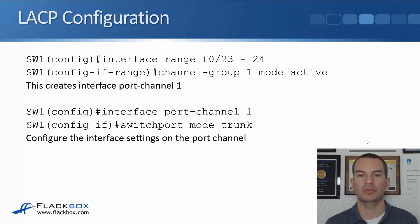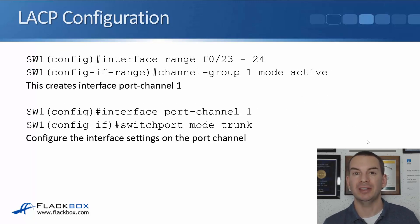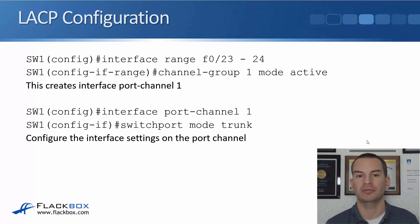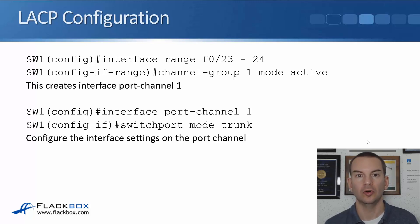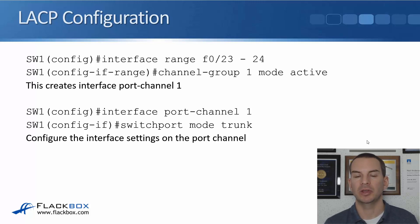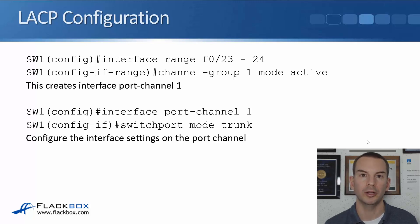The configuration is done at the interface level. Specify the interfaces you want to group into the port channel — here, interface range FastEthernet 0/23 to 24. The command is 'channel-group 1 mode active.' As soon as you enter that command, it creates a new logical interface, which is your port channel interface. Configuring channel-group 1 creates port channel 1.